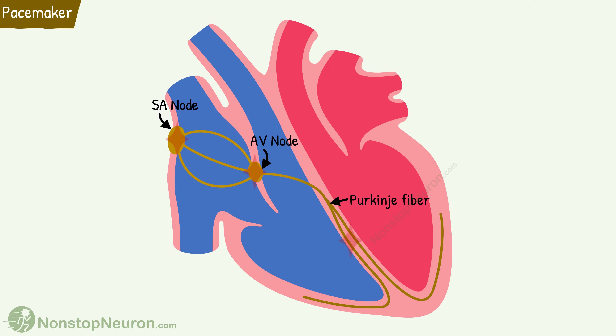Cells of these tissues can depolarize spontaneously and fire action potentials at a regular intrinsic rate. However, this rate is different for different tissues. The SA node generates impulses at the rate of 70 to 80 per minute, the AV node at about 40 per minute, and Purkinje fibers at about 20 per minute.